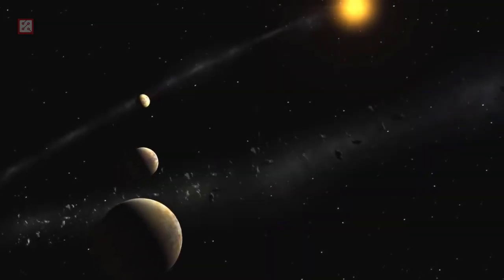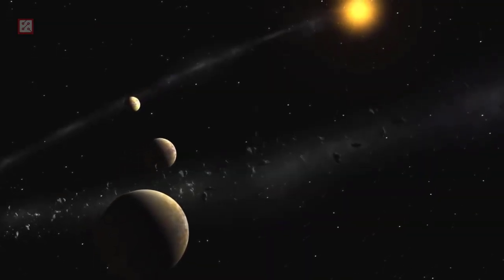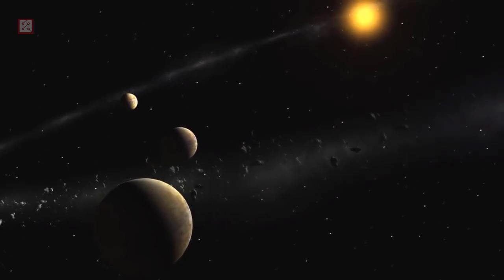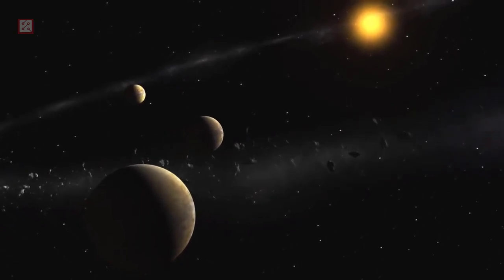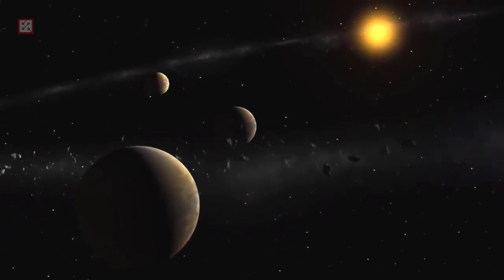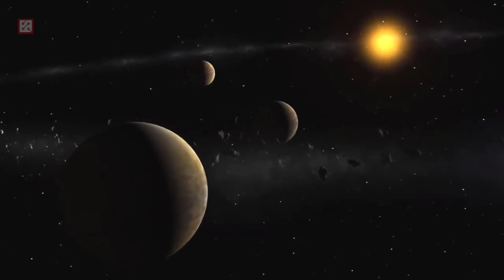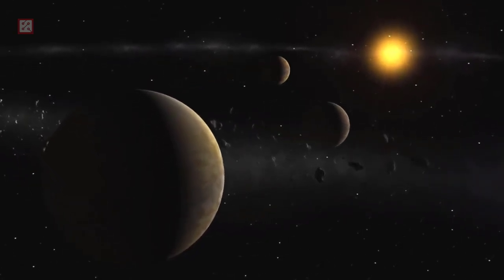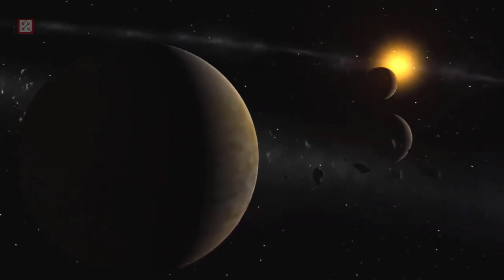An exoplanet or extrasolar planet is a planet outside the solar system. The first confirmation of detection of an exoplanet occurred in 1992. Since then, scientists have found a number of exoplanets from different constellations.